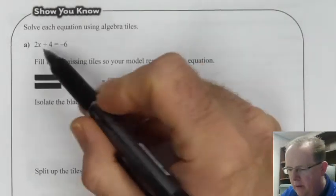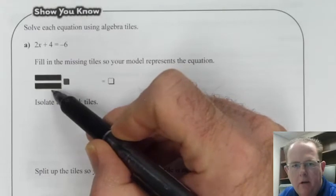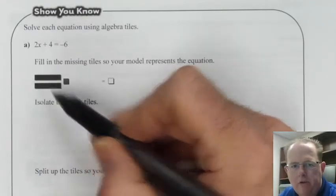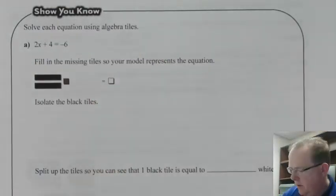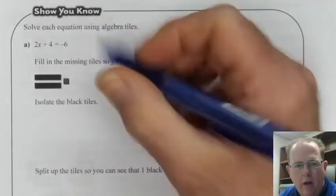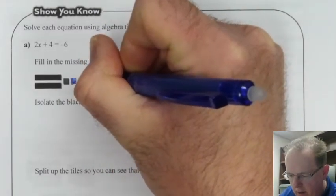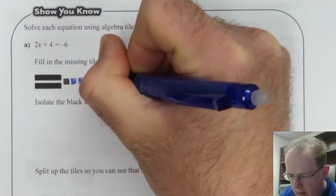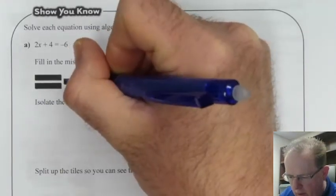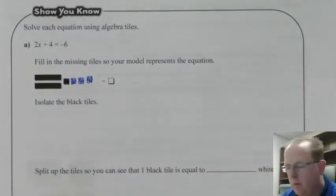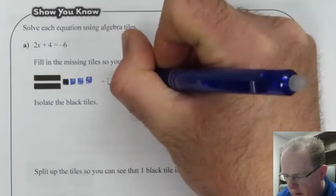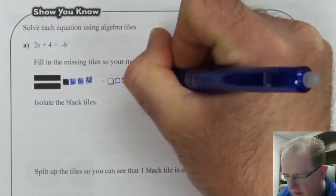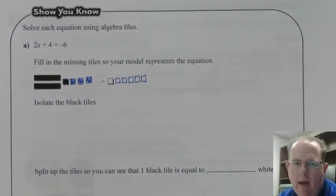So let's take a look. 2x, that's what these bars are. Remember that we can use bars to represent our variables. So we've got two of them, that's our 2x. Plus 4. We've got one positive tile here so we need to add 3 more in to give us a total of 4. Equals negative 6. So we've got 1, we need a total of 6.